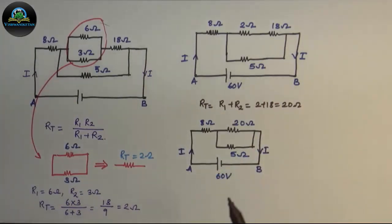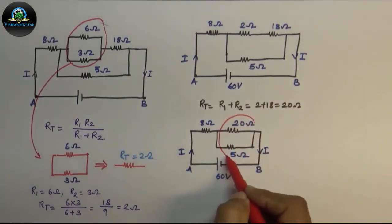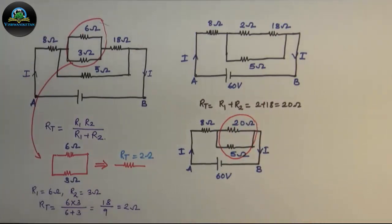Now from the circuit diagram, again we observe that 20 ohm and 5 ohm are connected in parallel. So we can convert these two resistances into a single resistance, which will give me 4 ohm.